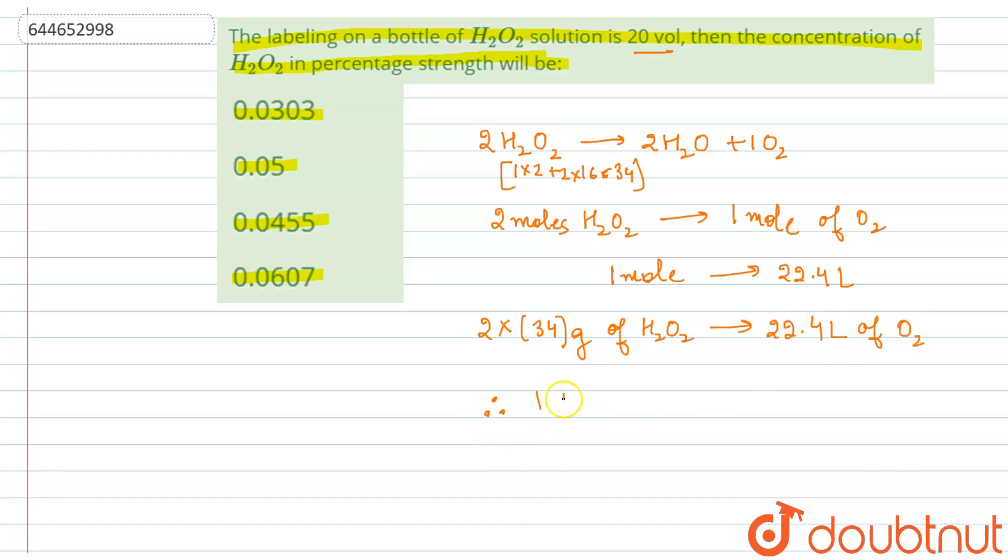Therefore, 1 liter of, we will apply the unitary method here. So 1 liter of oxygen will have 68, 2 into 34 is 68, upon 22.4 liters of H2O2.